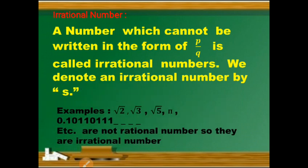For example, √2, √3, √5, π, and 0.1011011... with non-repeating digits are not rational numbers. So they are irrational numbers. These are the examples: √2, √3, √5. Now we will discuss sums and explanations about irrational numbers.